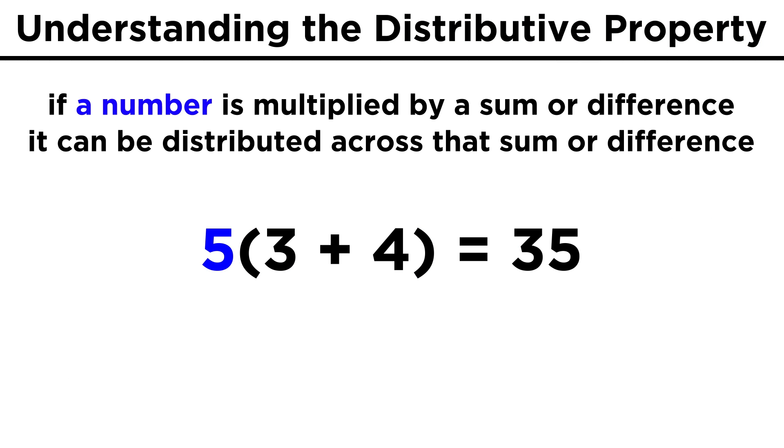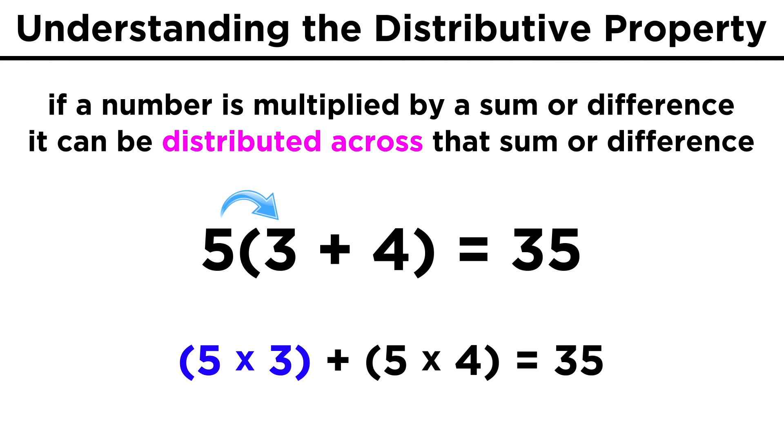When we have a number that is multiplied by a sum or difference, we can distribute that number across each value within the sum or difference. In this case, that means five times three plus five times four. That gives us fifteen plus twenty, which is indeed still thirty-five.